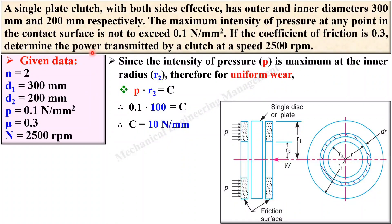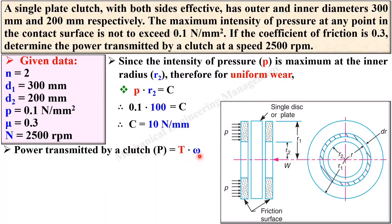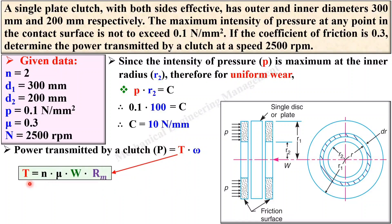Now we are going to find the power transmitted. Power transmitted by the clutch is P = T × ω, where T is the torque and ω is the angular velocity. Remember this equation: power transmitted by the clutch is always T × ω. To find P, you need both T and ω. The torque formula is T = n × μ × W × rm, where n is number of sides effective, μ is coefficient of friction, W is the load, and rm is the mean radius.